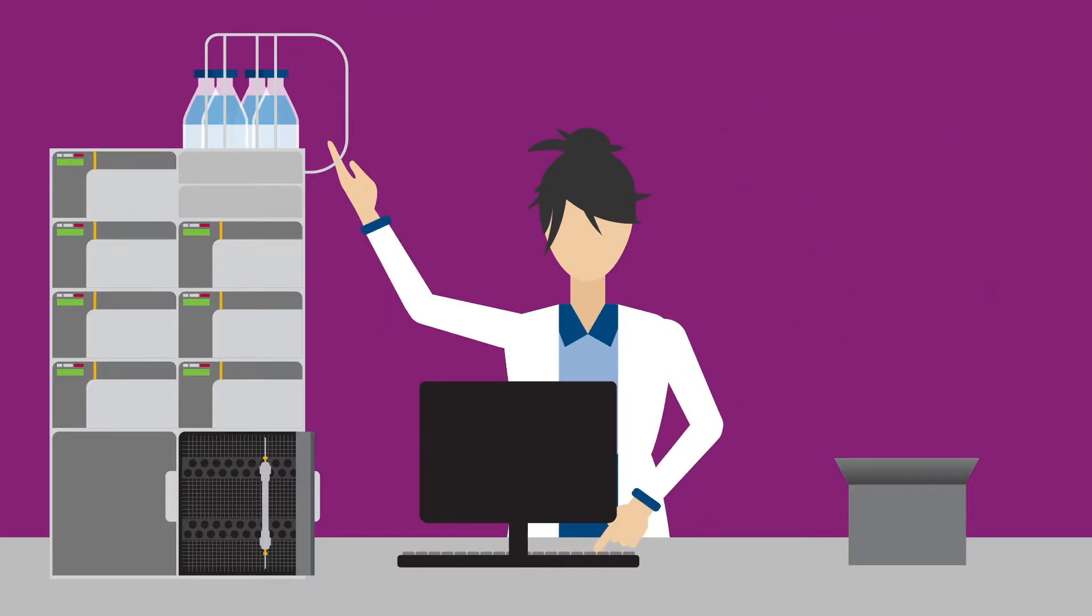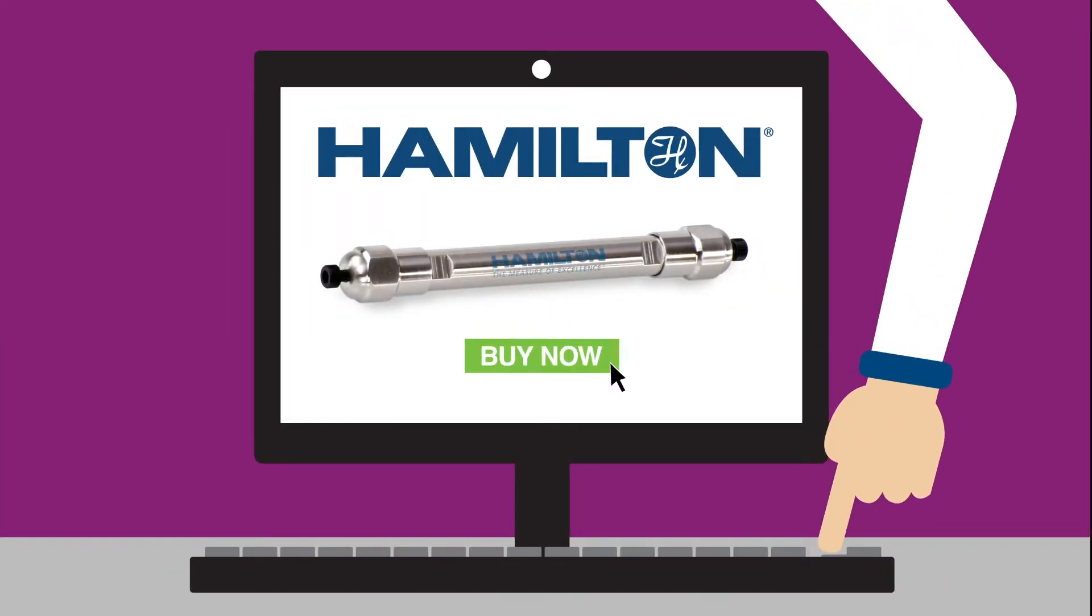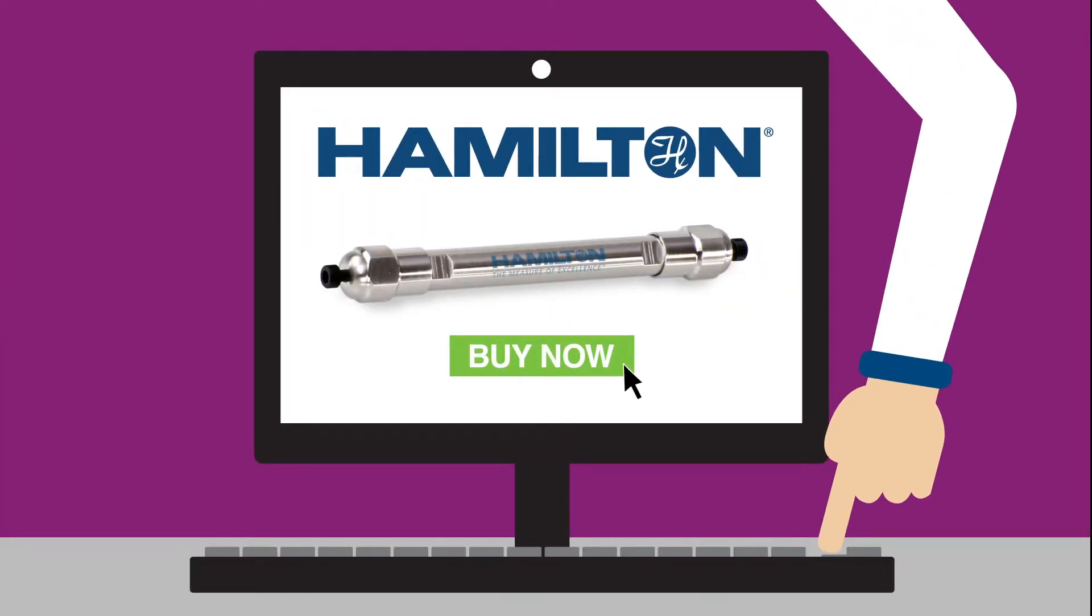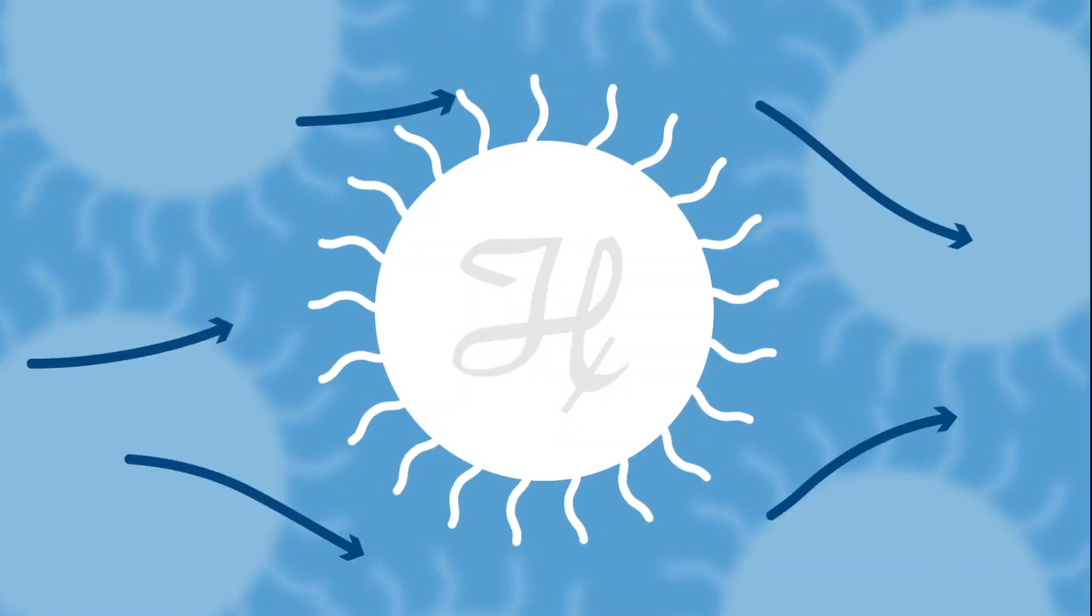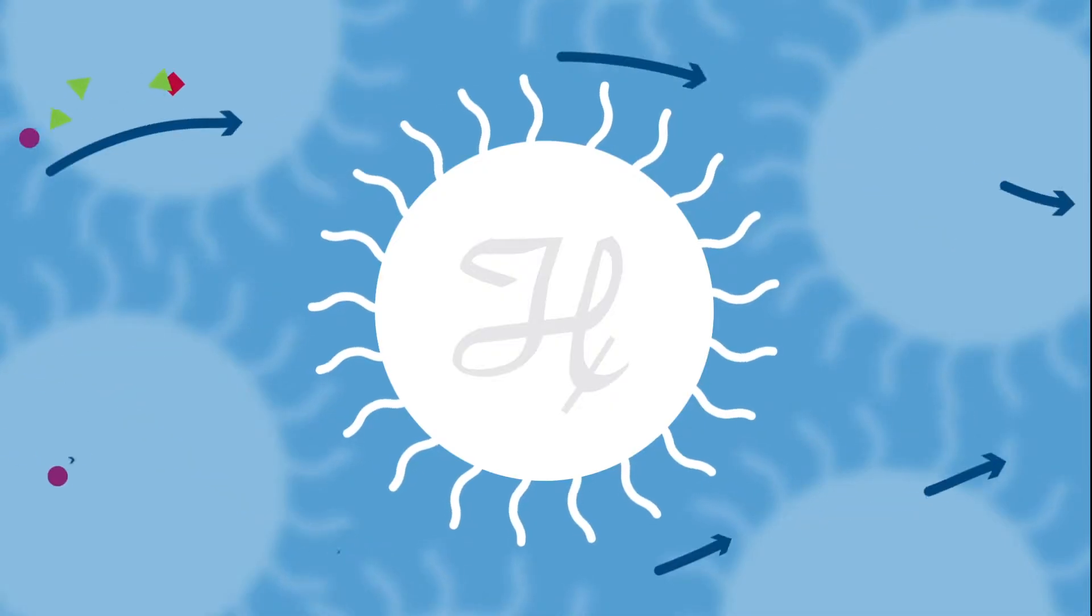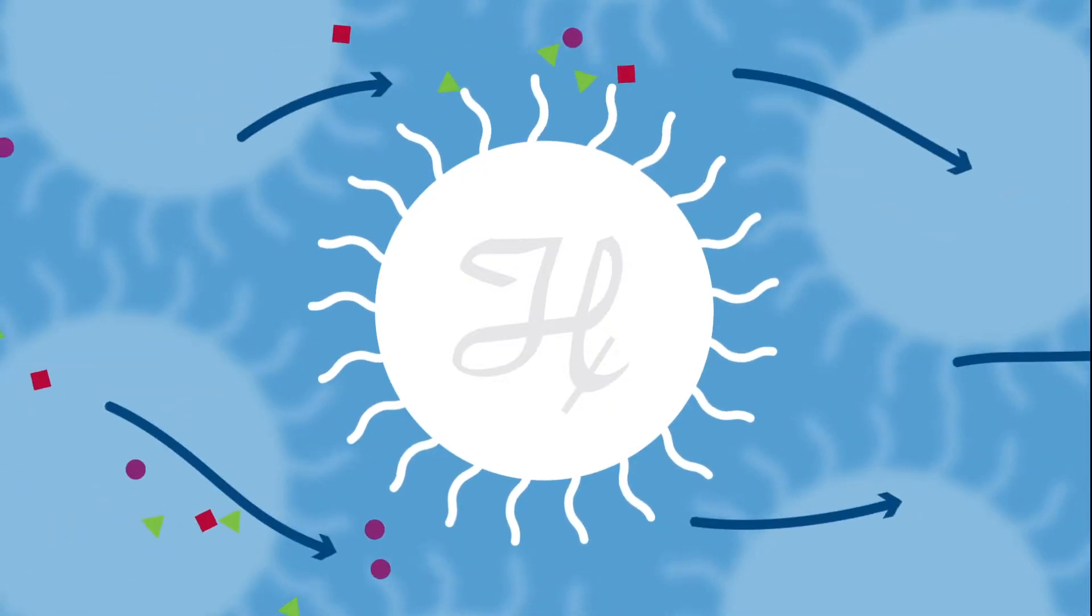That's why many oligo manufacturers have turned to polymeric divinyl benzene columns from Hamilton. Hamilton's PRP C18 offers a porous C18 functionalized polymer that exhibits excellent chemical and thermal stability.